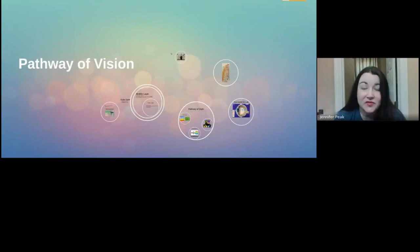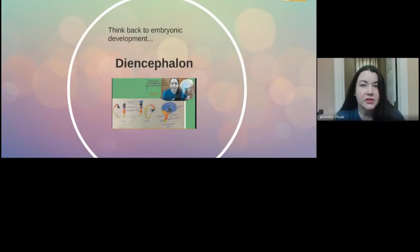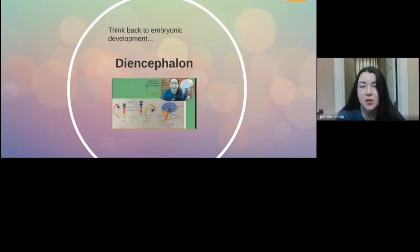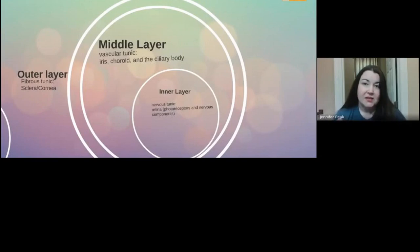Today we're going to talk about the eyes and go over the pathway of vision. If you think back to embryonic development, the eyes are formed when the brain tissue is formed, which is really cool because they end up having so many different cranial nerves and nervous tissue cells that supply the eyes. It all ends up forming from the diencephalon.